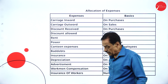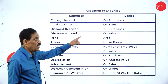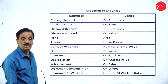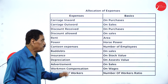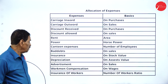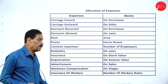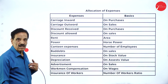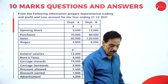When expenses are given, they should be allocated on a proper basis. The bases for allocation are: carriage inward on purchases, carriage outward on sales, discount received on purchases, discount allowed on sales, rent based on area, power based on horsepower, canteen expenses on number of employees, bad debts based on sales, insurance on stock value, depreciation on asset value, advertisement based on sales, and workman compensation based on wages.